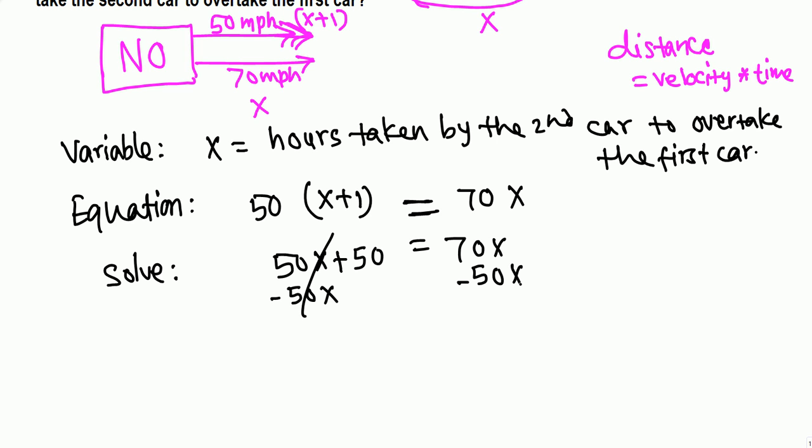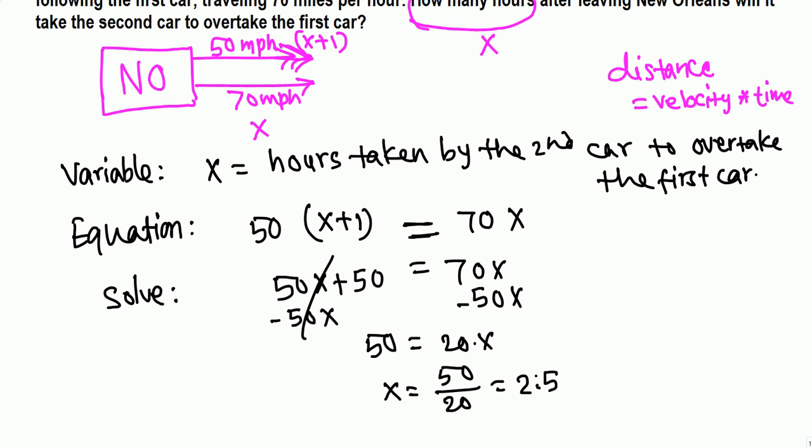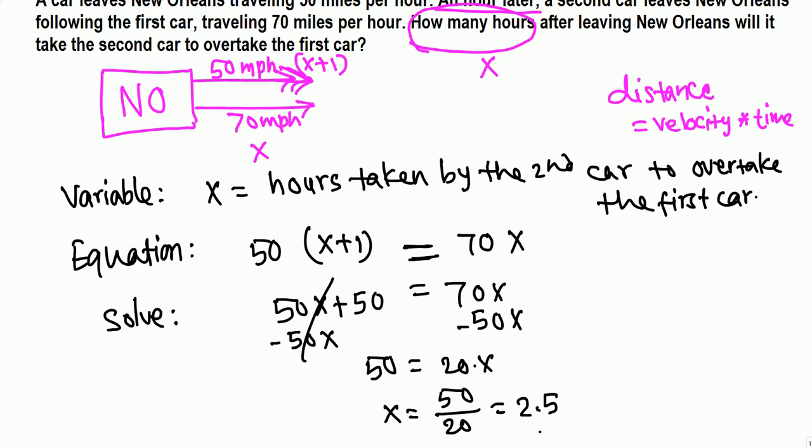We get 50 equals 70 minus 50, which is 20x. Now divide by 20, we get x equals 50 over 20, that means 2.5. So it takes 2.5 hours for the second car to overtake the first car.